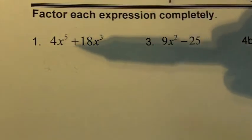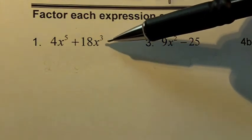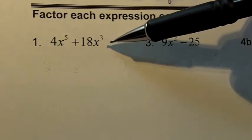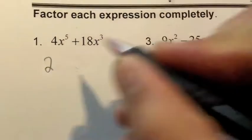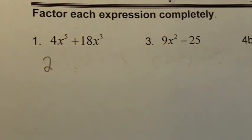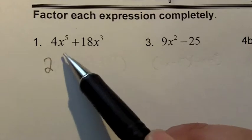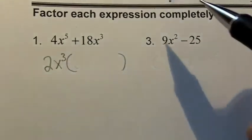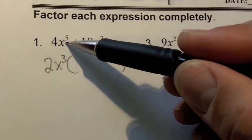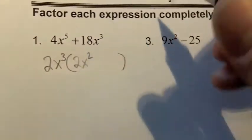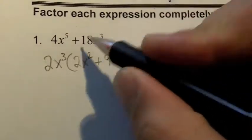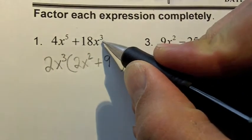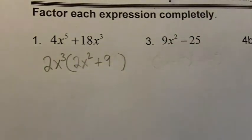Now let's take a look at problem one. I have two terms, but before I check for a difference of squares, I want to see if I can factor out the greatest common factor. For 4 and 18, the greatest common factor is 2. For x to the fifth and x to the third, they have at least three x's in common, so I factor out x to the third. Dividing 2x³ out of 4x⁵ leaves 2x², and dividing 2 into 18 gives 9 with no x's left. So the factoring is 2x³ times (2x² + 9).